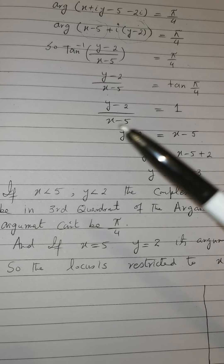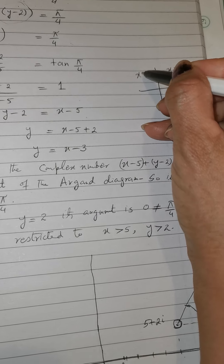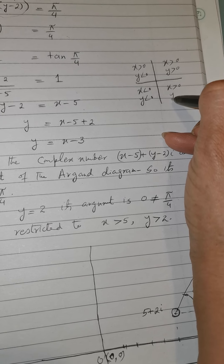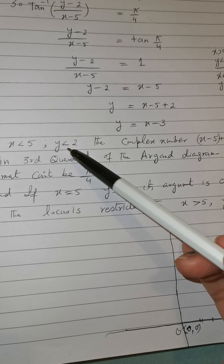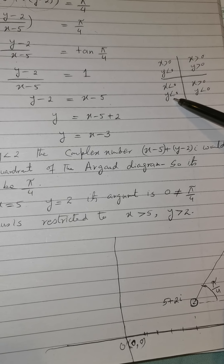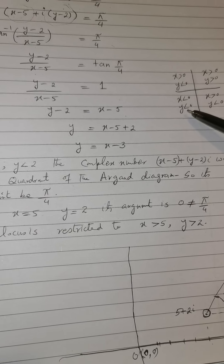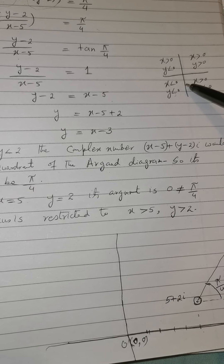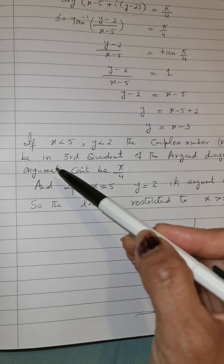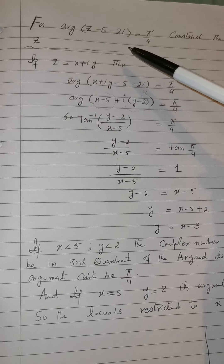In the Cartesian plane, the four quadrants have signs: first quadrant x positive y positive, second x negative y positive, third x negative y negative, fourth x positive y negative. If x < 5 and y < 2, the complex number (x − 5) + (y − 2)i lies in the third quadrant of the Argand diagram, where the argument cannot be π/4.